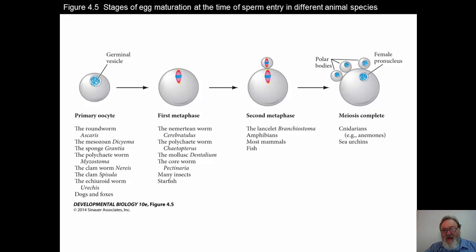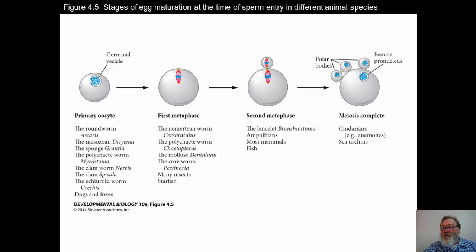Second metaphase is the most common among the vertebrates. Virtually all mammals — except canines like dogs and foxes — as well as fish and amphibians, have fertilization take place during the second metaphase. Those organisms where the female pronucleus has become totally haploid, meaning meiosis is complete, would be organisms such as sea anemones and sea urchins. In fact, sea urchins are the first organisms that were really well studied and are the most well understood of all the animal kingdom.